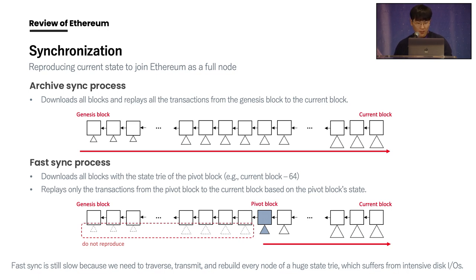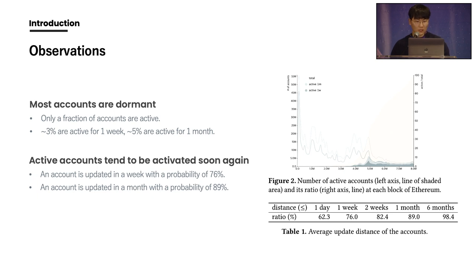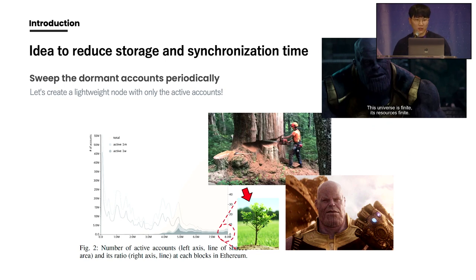FastSync significantly reduces storage size and synchronization time, but it is still slow because we need to traverse, transmit, and rebuild every node of the huge state trie, which suffers from intensive disk I/O. To optimize storage size and synchronization time, we investigated Ethereum and found that most accounts are dormant — only a fraction are active. About 3% are active for one week and 5% for one month. We also found that active accounts tend to be activated again soon: an account is updated within a week with 76% probability, and within a month with 89% probability.